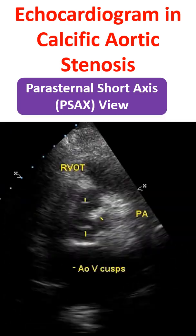Still image in parasternal short axis view in calcific aortic stenosis showing three leaflets in open position, i.e. systolic frame. The markers show the leaflets. The commissure between the left and right coronary cusps appears fused and thickened.